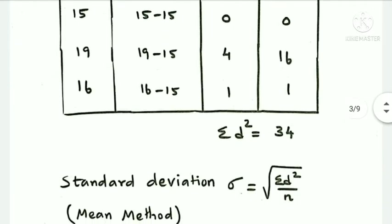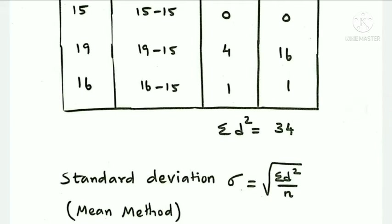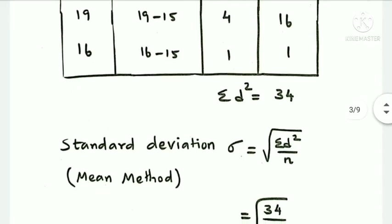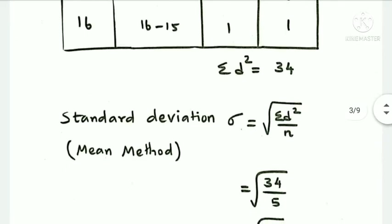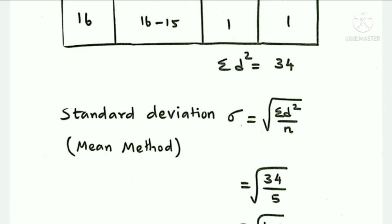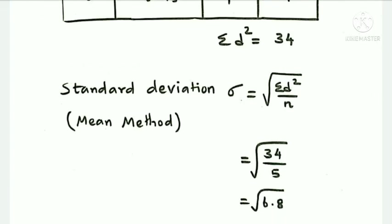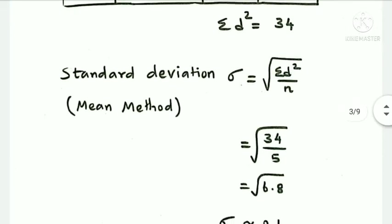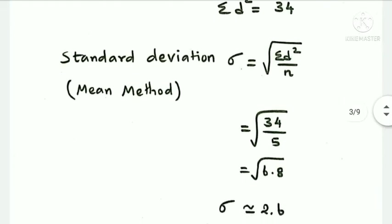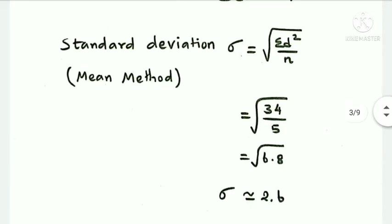Standard deviation using the mean method formula: sigma equals root of (summation d squared by n). Summation d squared is 34 and number of data n is 5. So root of 34 by 5 gives root of 6.8, and the standard deviation sigma is approximately 2.6.